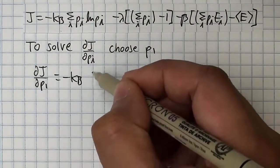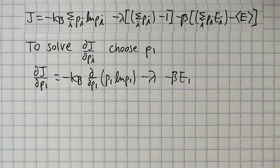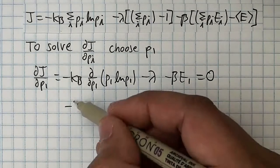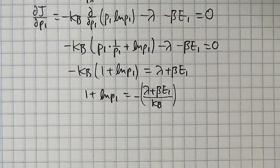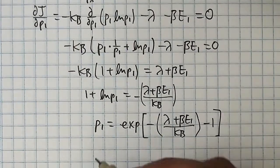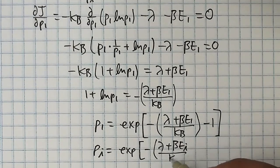Without loss of generality, we can just take the derivative with respect to p1. This trick collapses all of the sums to just one term each. Next, we apply the product rule, remembering what the derivative of a log is, and solve for p1. Once we have p1, we can immediately write down the general form for pi.